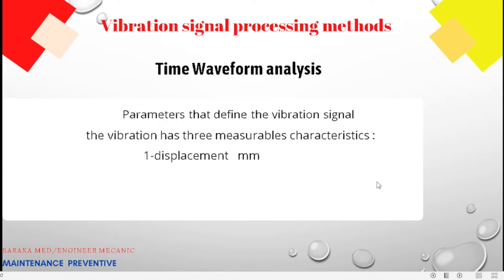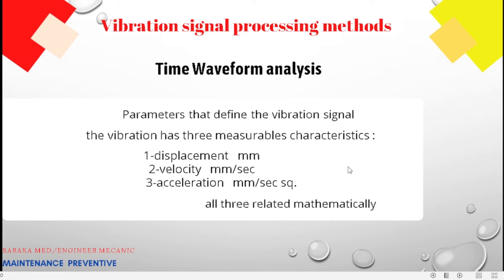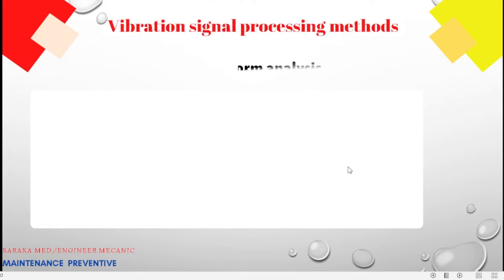So vibration has three measurement characteristics: displacement, velocity, and acceleration. Displacement is measured in millimeters, velocity in millimeters per second, and acceleration is ordinarily measured in meters per second squared.